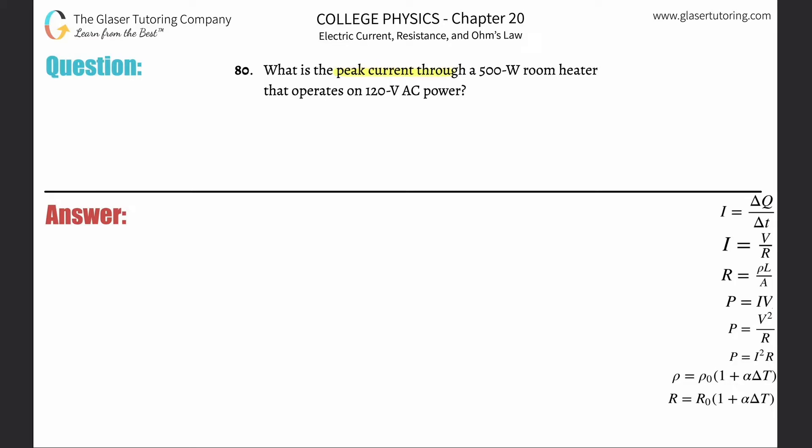Number 80: What is the peak current through a 500 watt room heater that operates on 120 volts of alternating current power? They want to find the peak current. They're giving us a wattage, they're giving us a voltage, and what we have to do is have a formula that relates some of these variables.